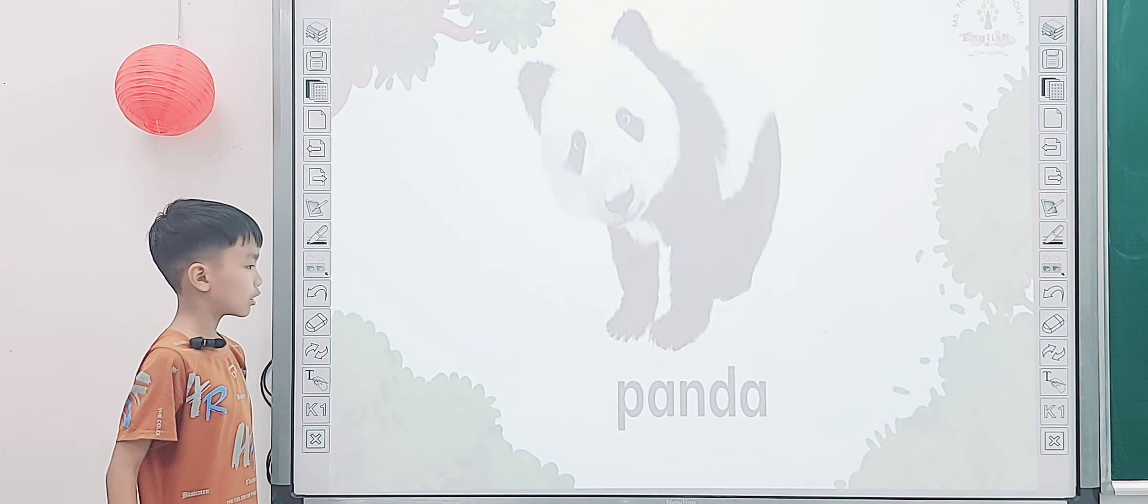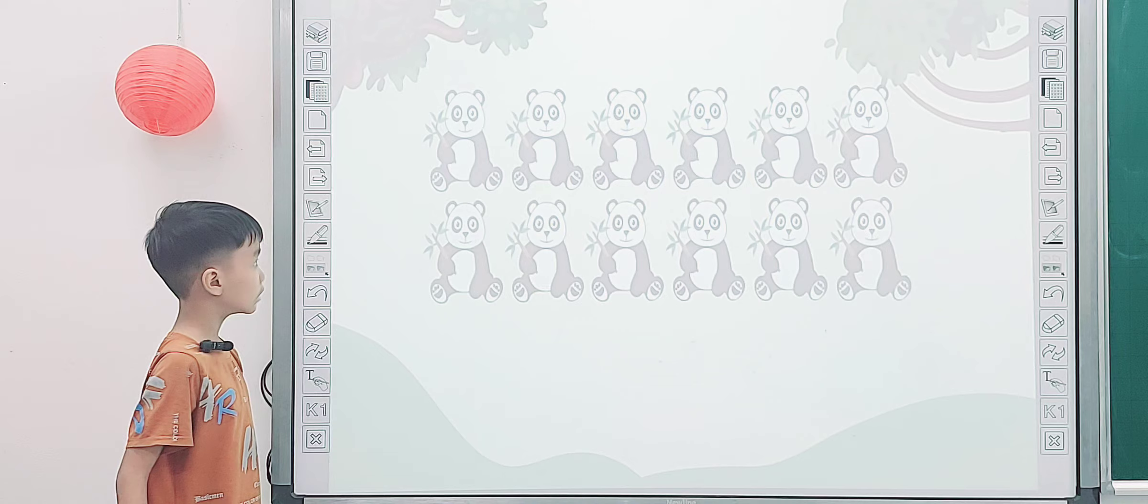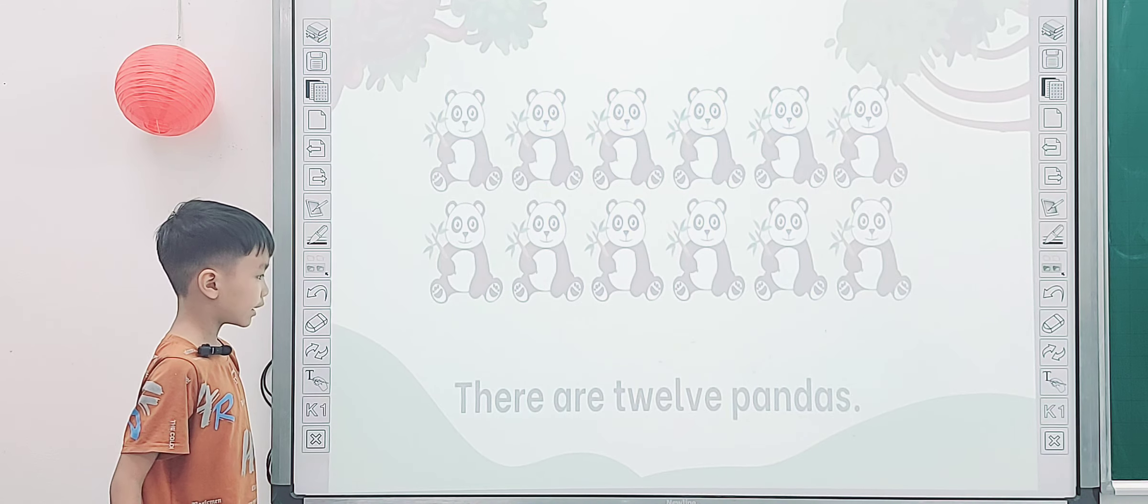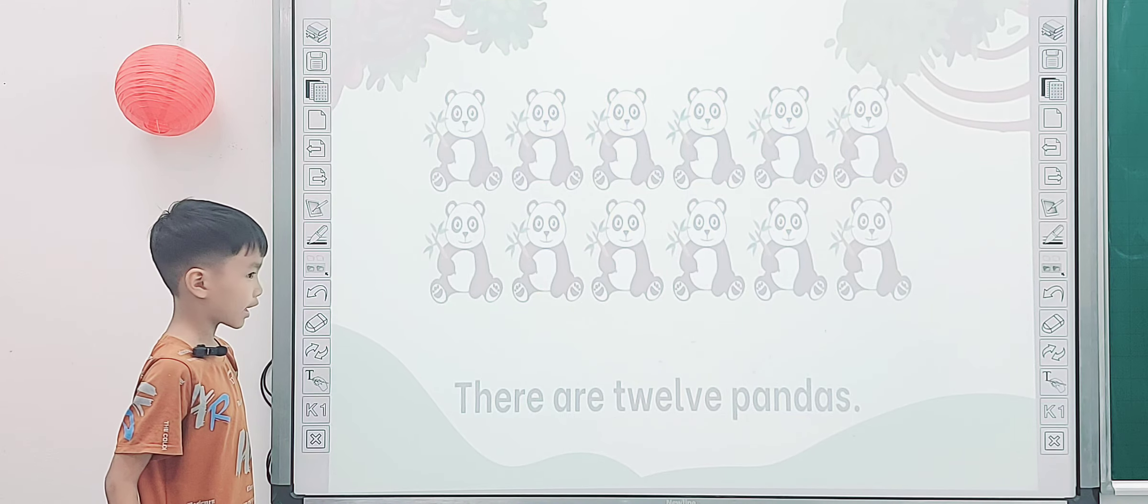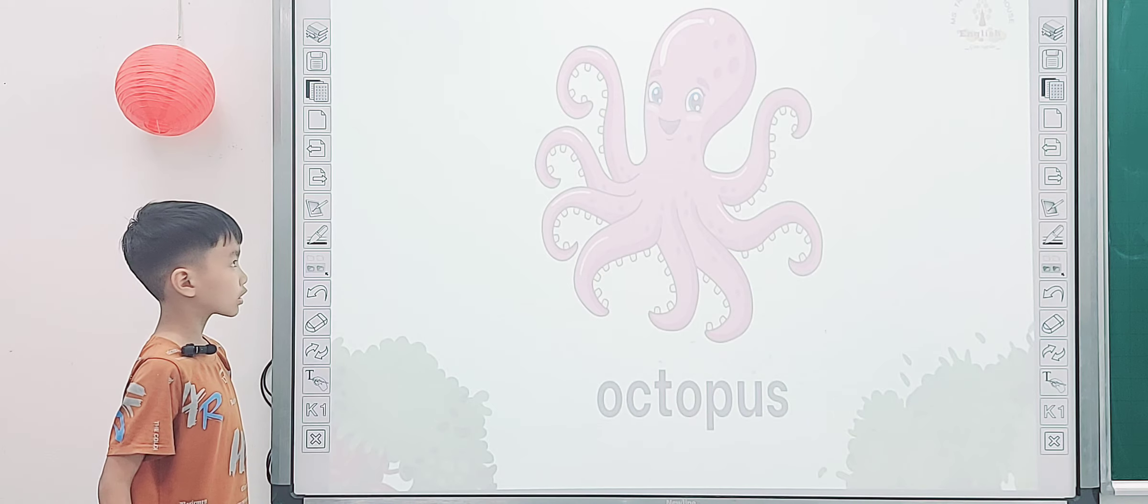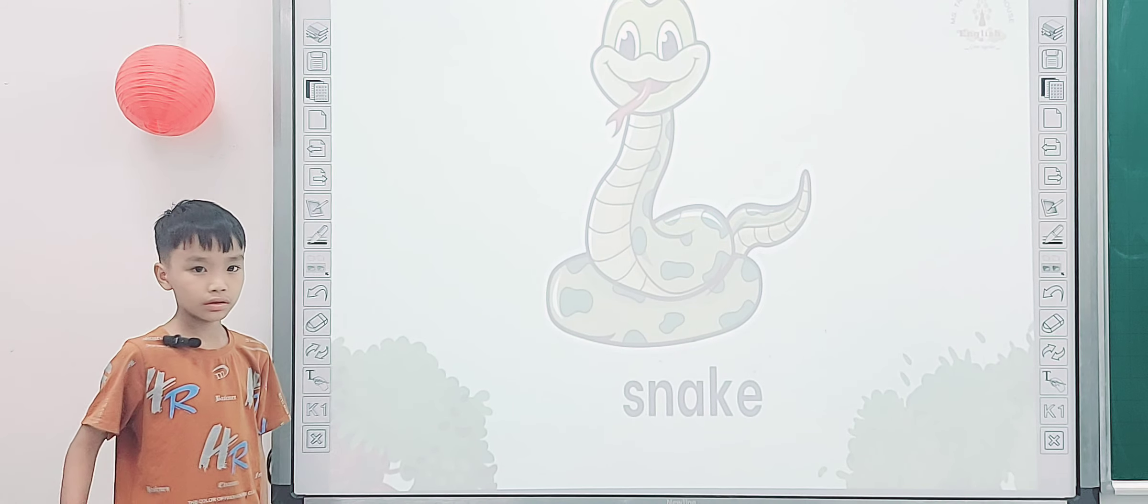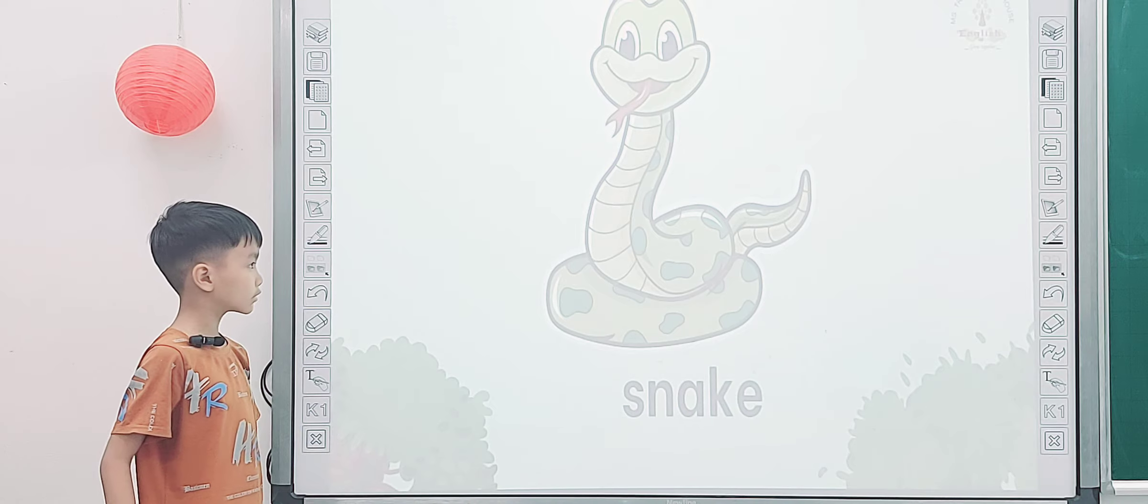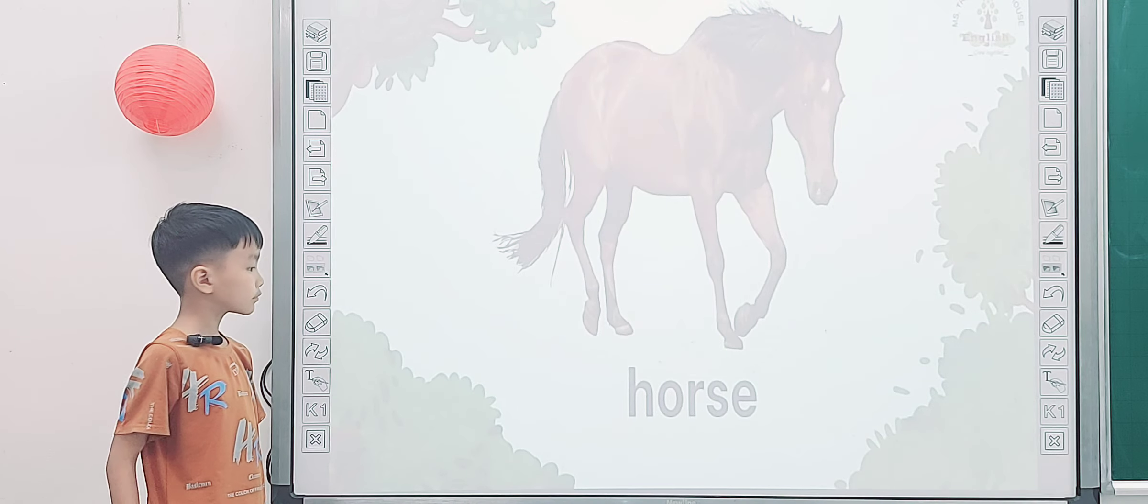And this one, what is it? Pandas. Yeah, and how many pandas are there? There are 12 pandas. Yeah, and next one, what is it? Octopus. How about this one? What is it? It is a snake. This is a snake.